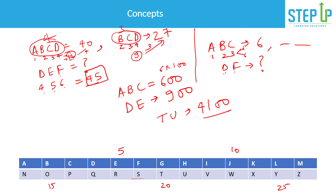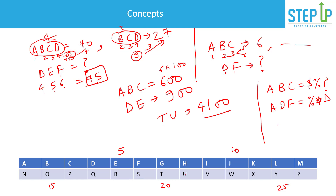Sometimes they give you symbols — for example, A B C is coded as dollar, percentage, question-mark, and A D F is coded as percentage, star, triangle. The question is: what is the code for A? The only thing common to both coded sequences is 'percentage,' and the only common word is A — so A equals percentage.